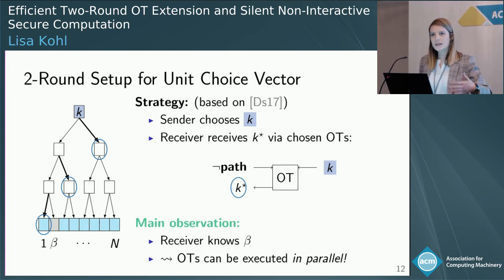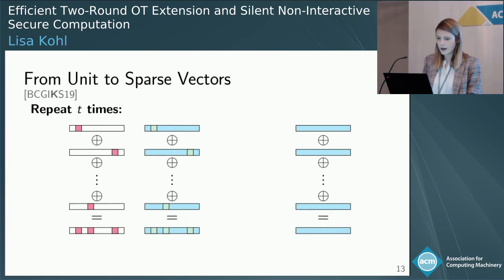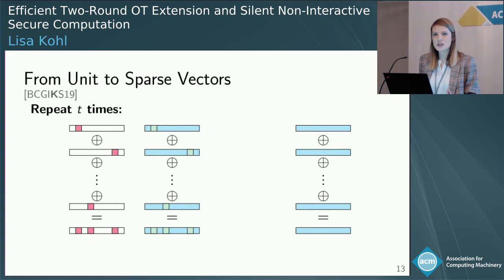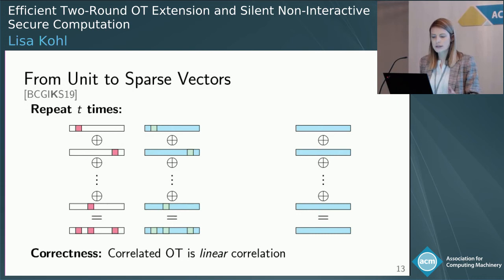This is also why in the previous work we had a log n factor, because in the execution of the OT — also in the Derner-Schellatt protocol — you have to do it sequentially. To get from unit vectors to sparse vectors, the simplest thing you can do — not the most efficient, but the simplest — is you just add them up. This is just a local operation, so this can be done by the parties locally.